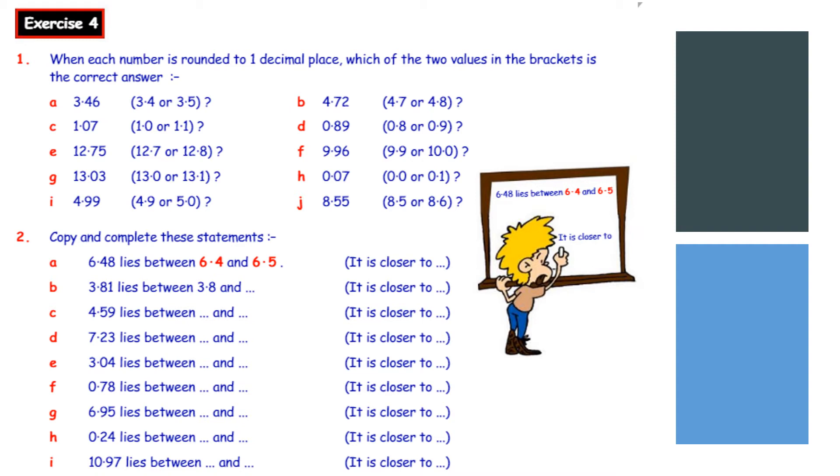Number two, 6.48. It lies between 6.4 and 6.5. It is closer to, well we look at the eight. The eight tells us to round up, so it's closer to 6.5. Or 6.48 to the nearest ten would be six pounds fifty, so it's closer to 6.5. Again, if you keep the zero in, I'm absolutely fine with that.